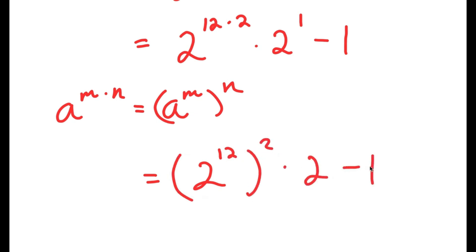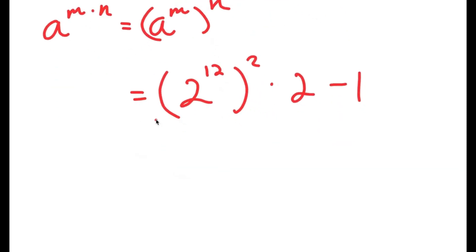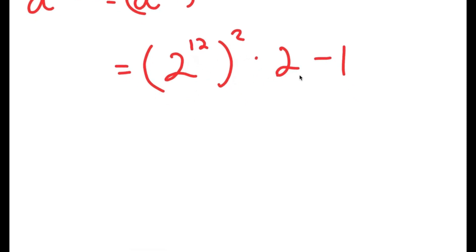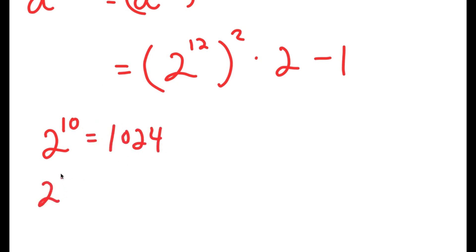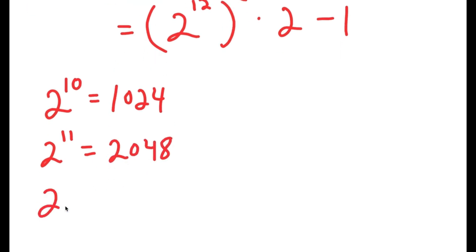Now I'm going to plug in the actual value of 2 to the power of 12, because it's small enough where we know the exact value of it. 2 to the power of 10, you should always remember as 1024. So 2 to the power of 11 is double of 1024, which is 2048. And 2 to the power of 12, which is the value we're looking for, is double of 2048, which is 4096.